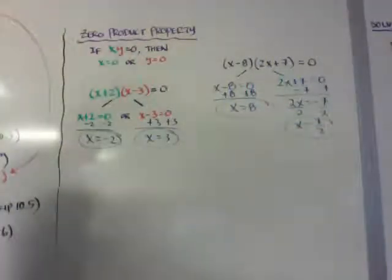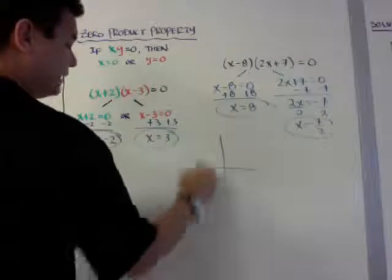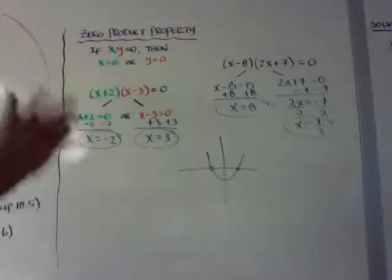So there's your two answers, which means it would cross twice. You'd have two answers, because they have two solutions or two roots, two x-intercepts.